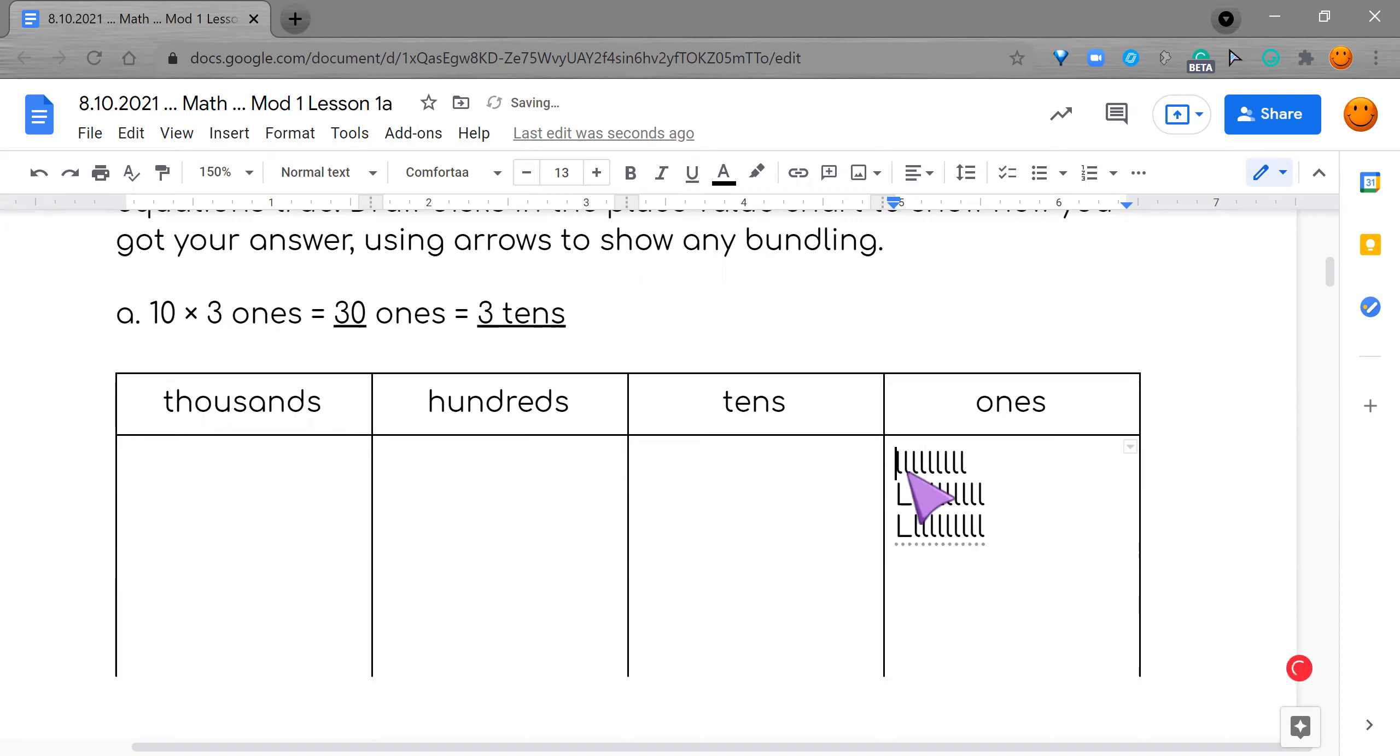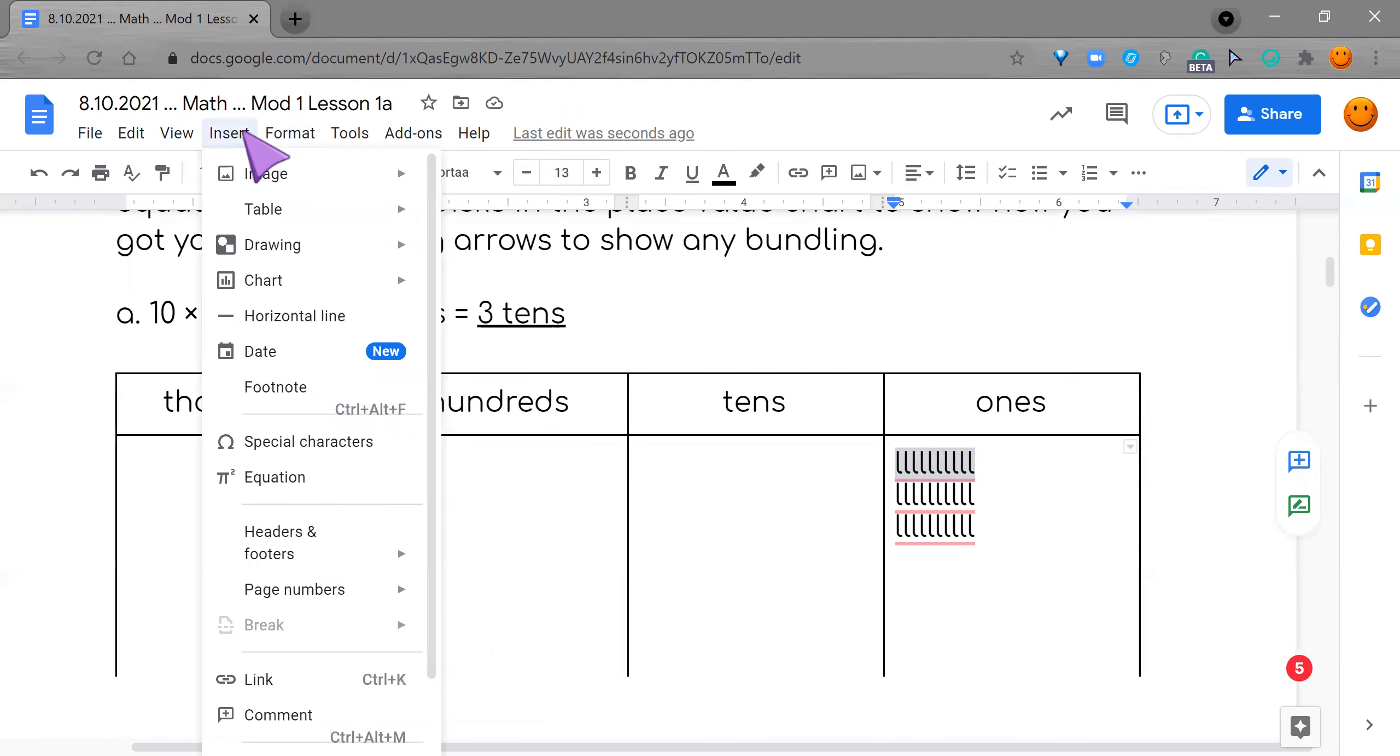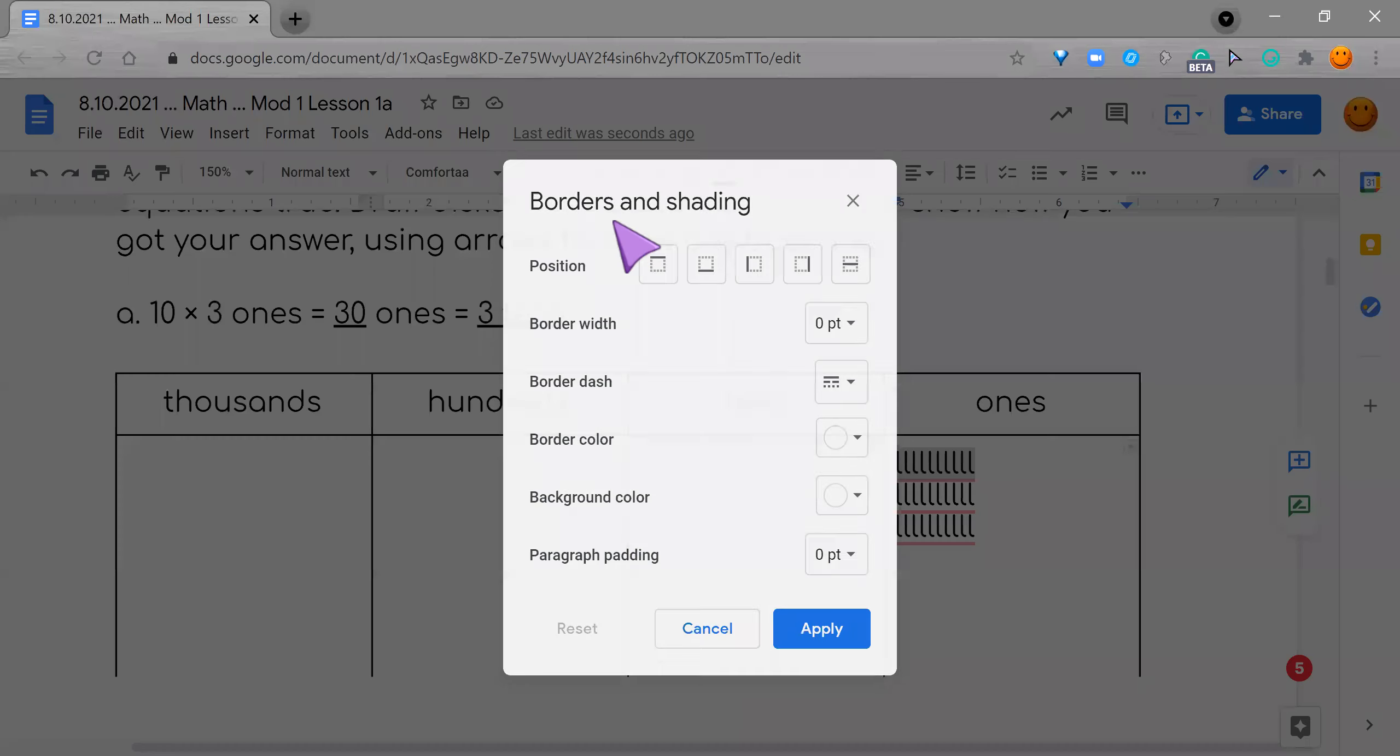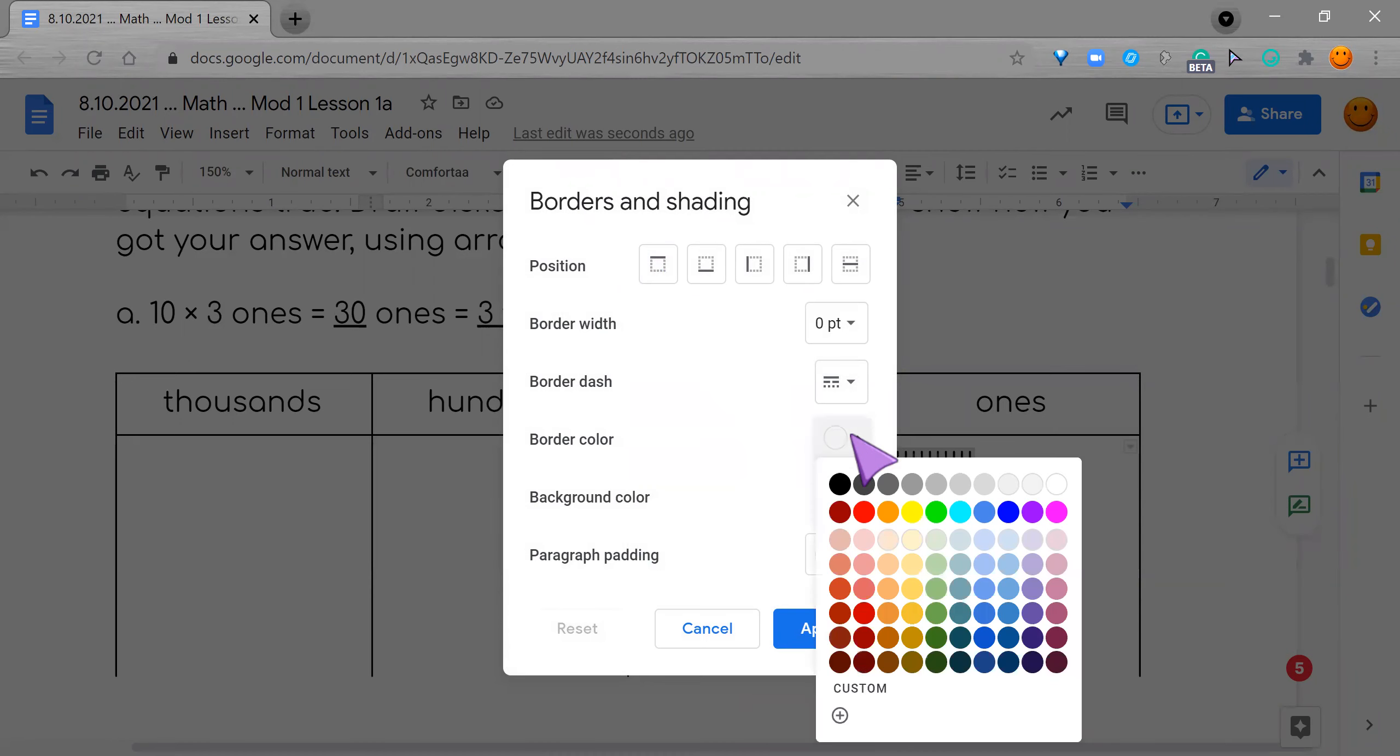Okay, now I'm going to take these big L's and fix them and put them in as little L's. So for every 10, let's see if I can do this. There is a way to put a square and I am not seeing it. Okay, let's do a border color.